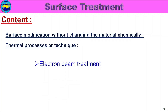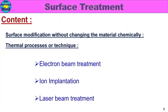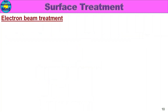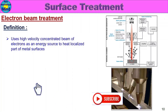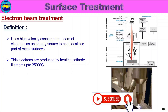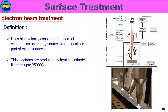First, electron beam treatment. We will see the details of the electron beam. In the metal surface, we use a concentrated electron beam to heat the surface. These electrons are produced by heating a cathode filament up to 2500 degrees Celsius — this thermionic process produces the electron beam.